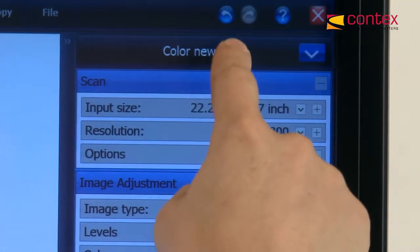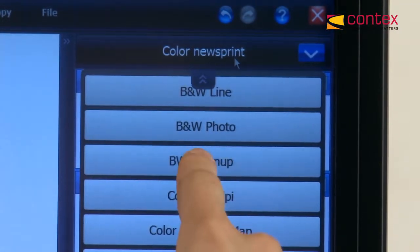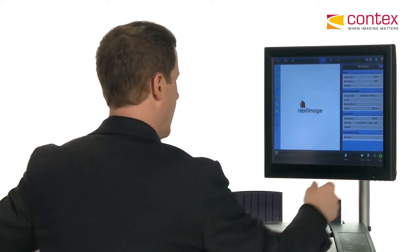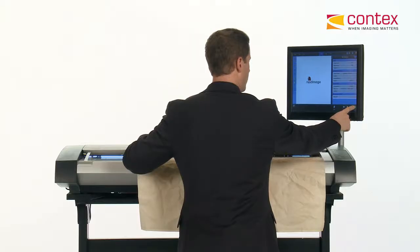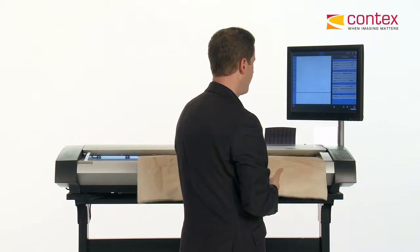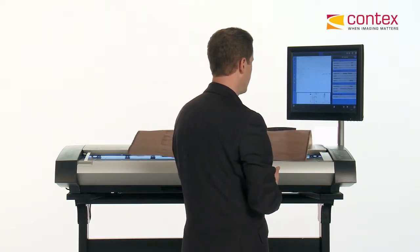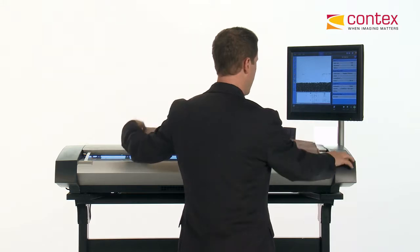So I'll choose now from my preset list, black and white cleanup. That will allow me to clean up the dark background in that document and make it look like it's new again. And then I'm ready to scan. I'll just choose the green button. And there you have it.